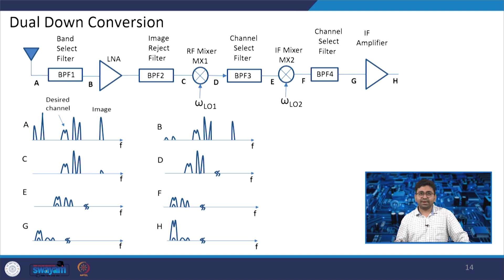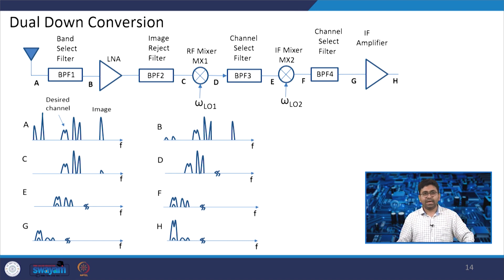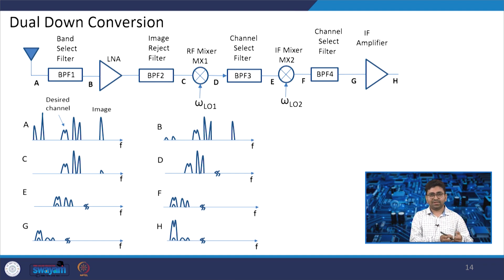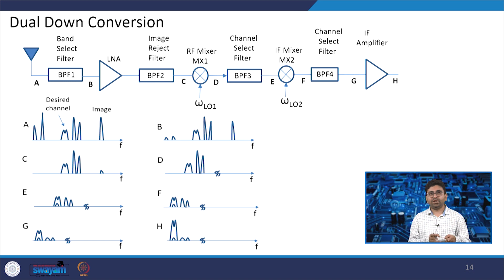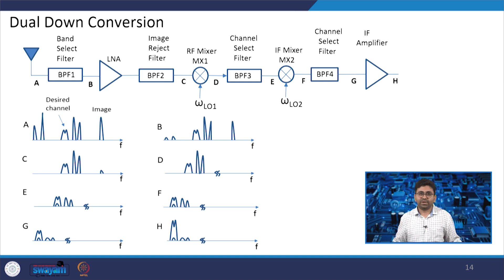There is another kind of receiver used in certain applications: the dual down conversion architecture, which addresses both channel selection and image rejection. This heterodyne receiver performs dual down conversion and is sometimes called a super-heterodyne receiver because it employs two stages of down conversion.